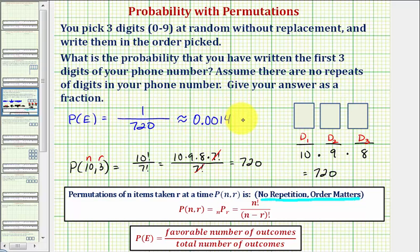To convert to a percentage, we would multiply by 100 and add a percent sign, which would be 0.14%. But again, in our homework, we're only going to enter the exact probability, which would be the fraction.